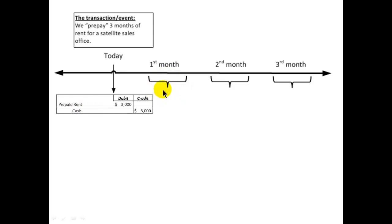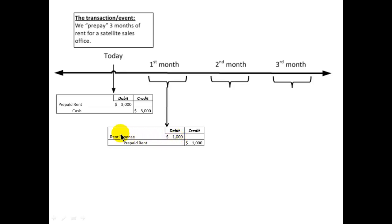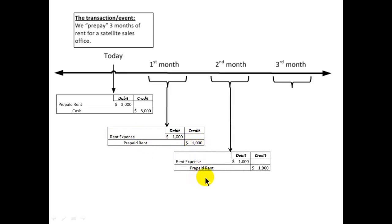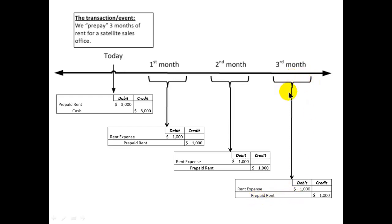What are we deferring? We're putting off the recognition of that rent expense, and we're going to recognize it in the appropriate month. In the first month, we have rent expense of one thousand dollars — one-third of the amount we paid — and we credit prepaid rent for that thousand dollars. We do the same in the second month and the third month. At the end of the third month, prepaid rent has gone from three thousand down to zero, but each month got its proportionate share of rent expense: one thousand dollars per month.